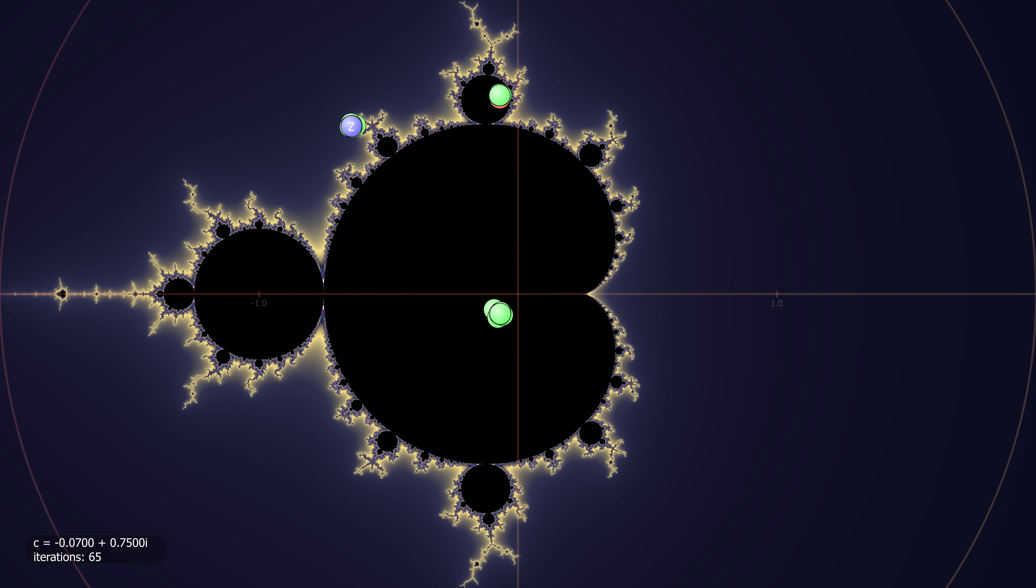Every bulb attached to the main cardioid has an associated period. Notice that I can move C around within the bulb, and the orbit still converges towards three points.